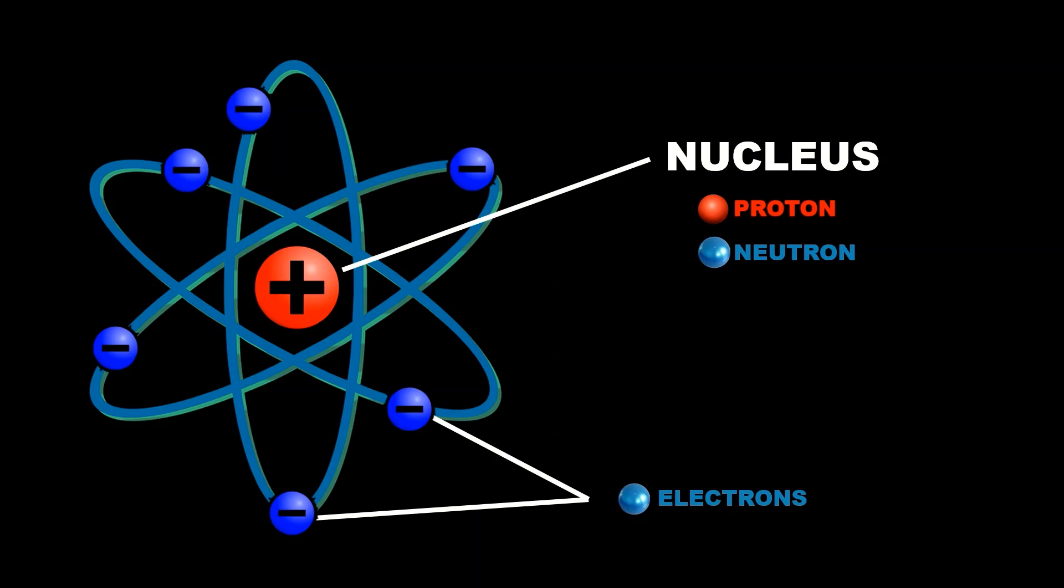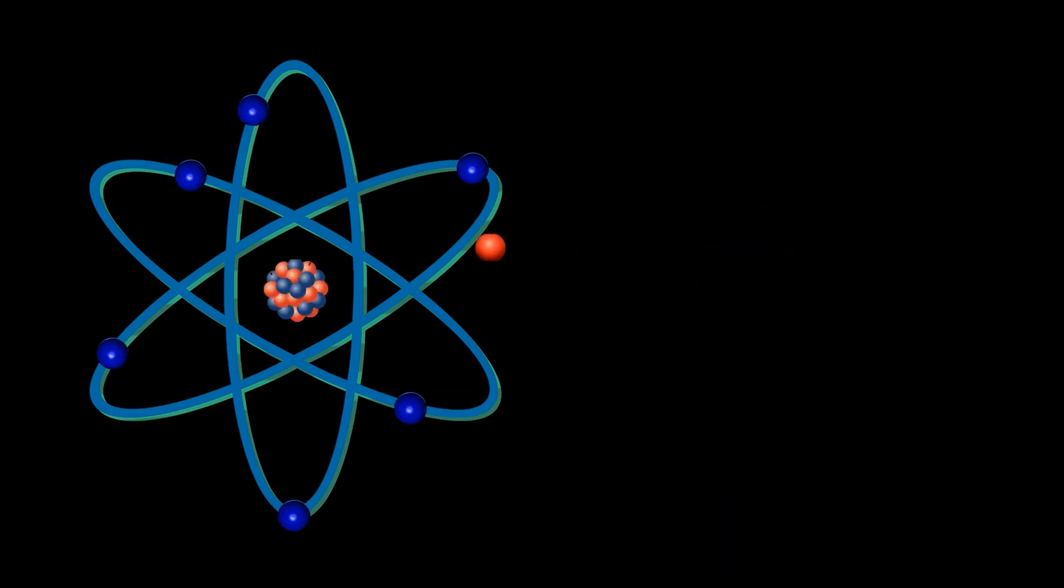If we change the number of protons in an atom, an entirely new element is created. But if we change the number of neutrons, something called isotopes are created.